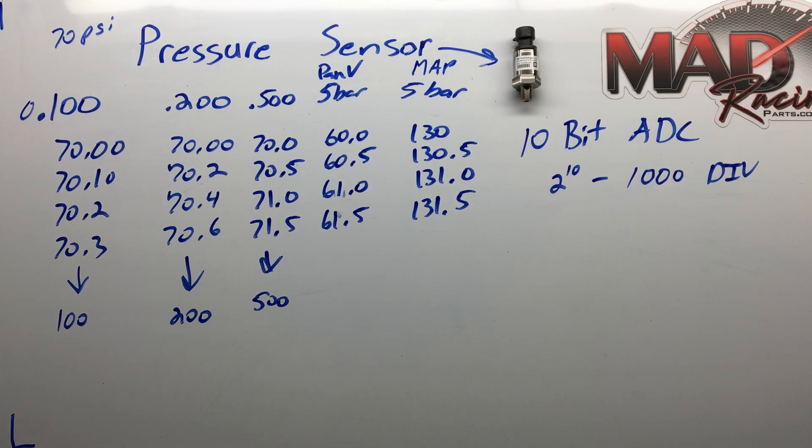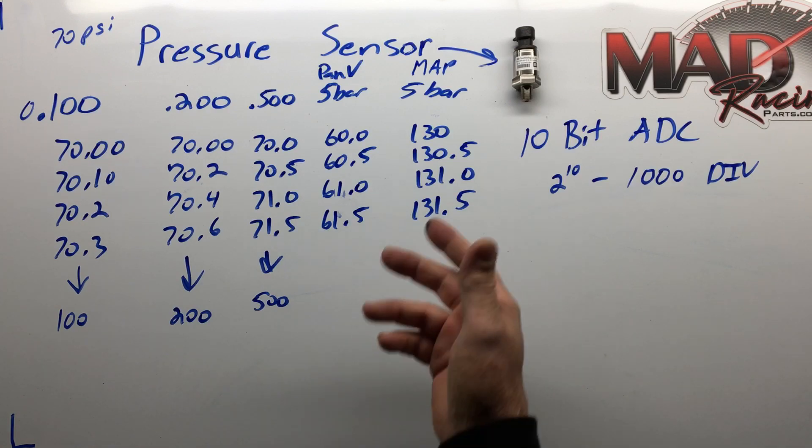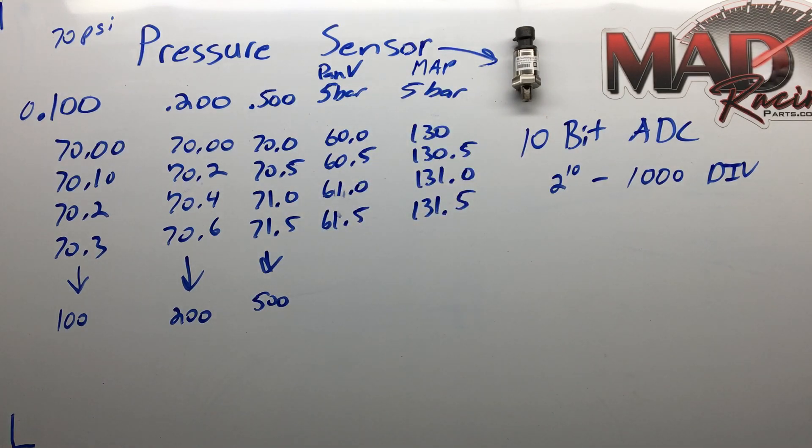Once you get over 60 pounds of boost, maybe you want to consider a seven or a ten, but for most of us the five bar is adequate for anything we're doing. So hopefully that explains some things.